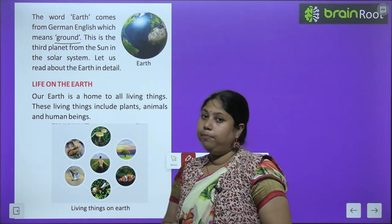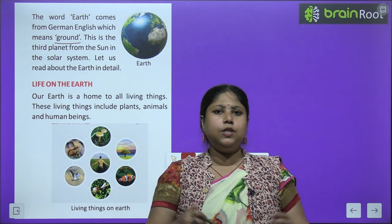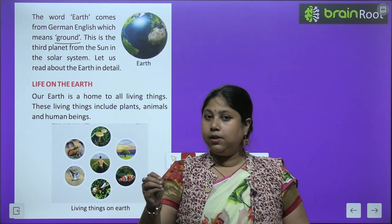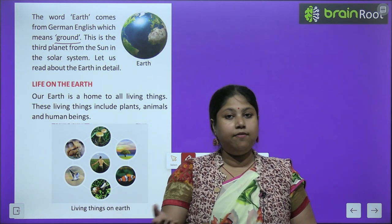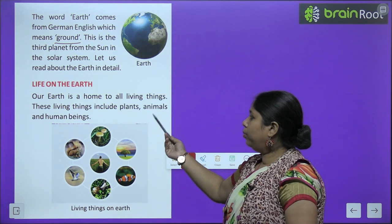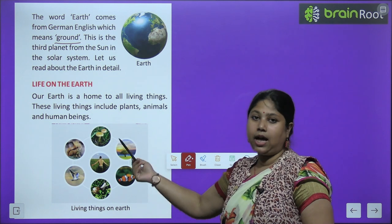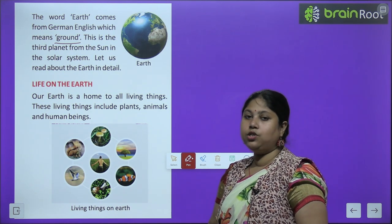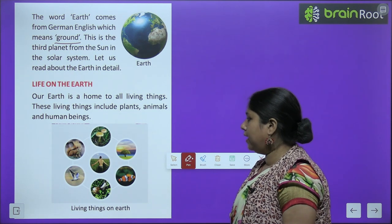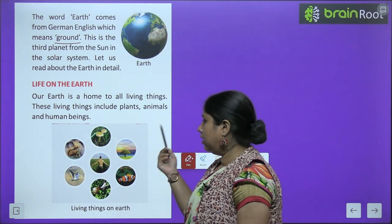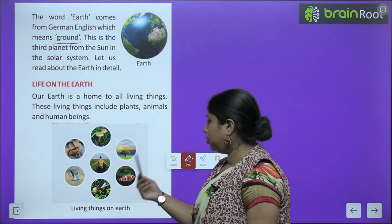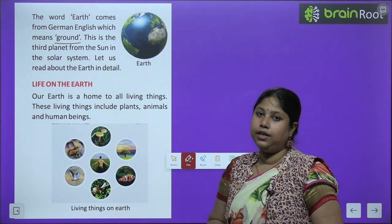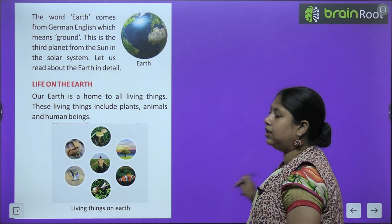Life on earth — आप सभी को पता है कि earth ही सिर्फ एक ऐसा planet है जिसमें life possible है। Human beings और any kind of living beings are only sustainable on earth। Our earth is home to all living things — these include plants, animals, human beings, fungus, algae, microorganisms, trees, fishes, birds, and different kinds of animals. जितने भी living creatures हैं, वो सब earth पर मिलती हैं।